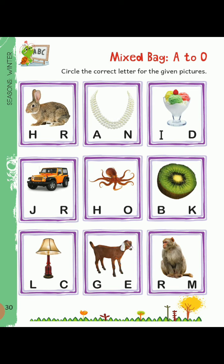Next is K — kiwi. So, circle letter K. Next is L — lamp. So, circle letter L. Next is G — goat. So, circle letter G. Next is M — monkey. So, circle letter M.